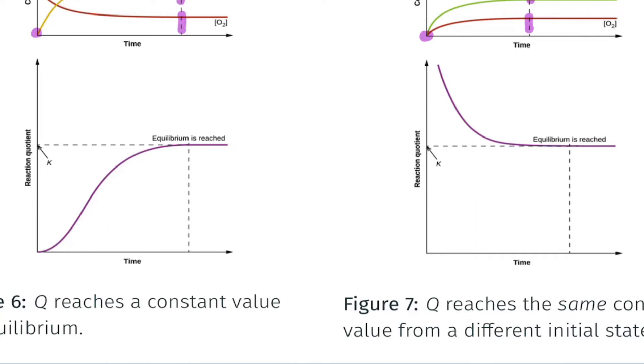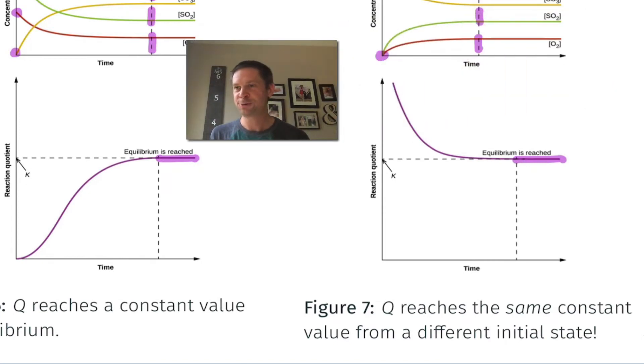But over time we reach a situation where eventually the value of Q becomes constant and in fact the value of Q is the same in both reactions. And in fact that's true no matter what initial conditions we start with. The value of Q will tend to a constant value characteristic of the reaction itself really, having nothing to do with the initial conditions.